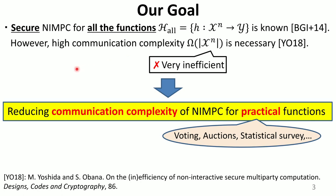Previously, it is known that unconditionally secure NIMC protocol for all N-input functions is possible. However, such a protocol must result in exponentially large communication complexity because of a non-lower bound. So in this work, we focus on a special class of practical functions with applications to voting, auctions, and so on.